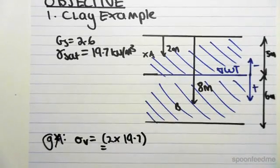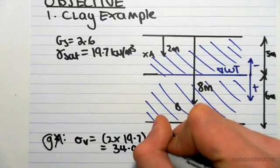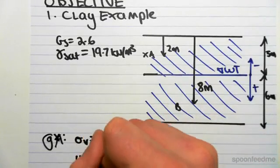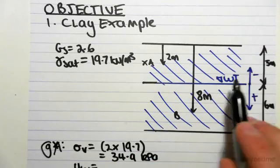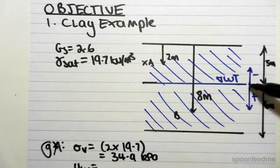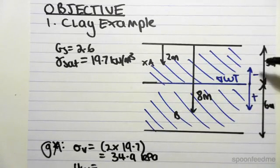And now the pore water pressure, because our convention is now going up from the water table. Normally we go down, so it becomes positive. But because we're going up from the water table, it's actually negative.